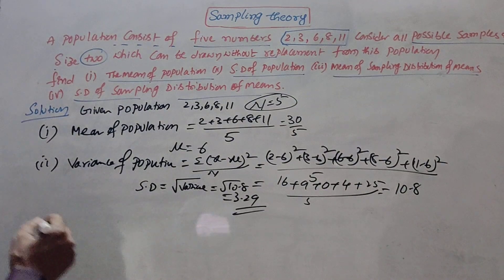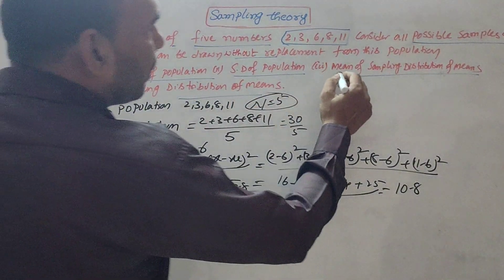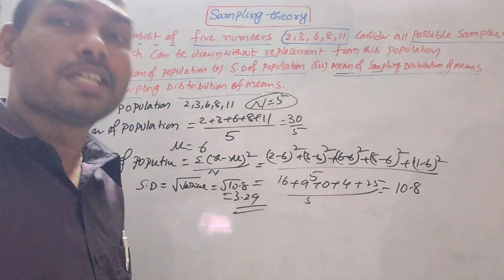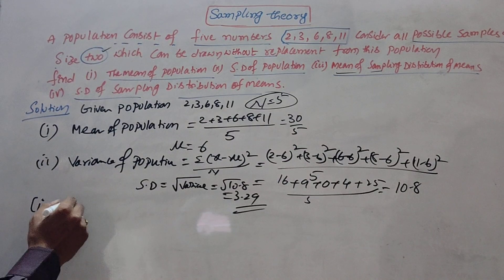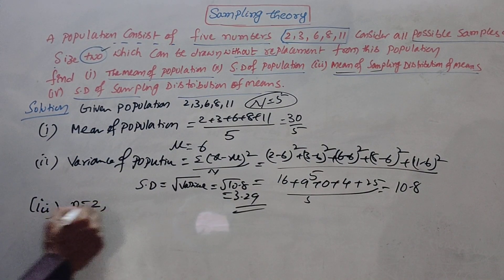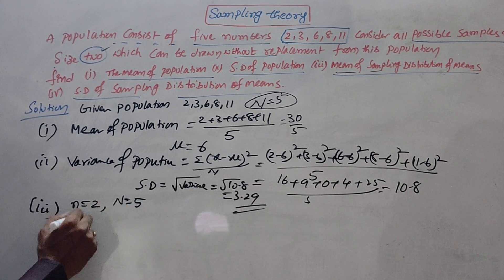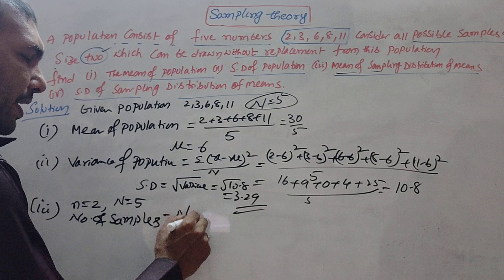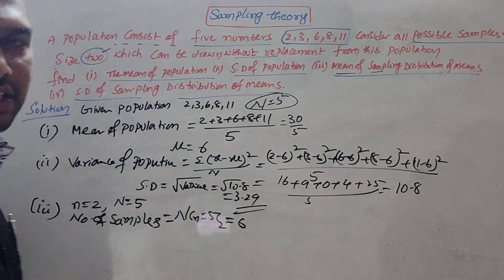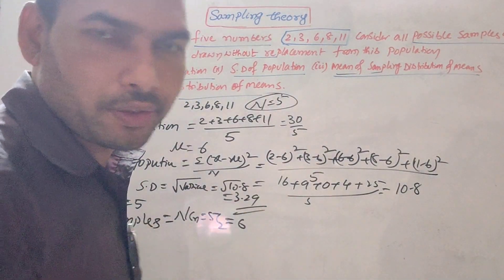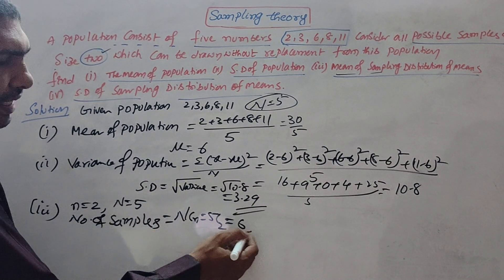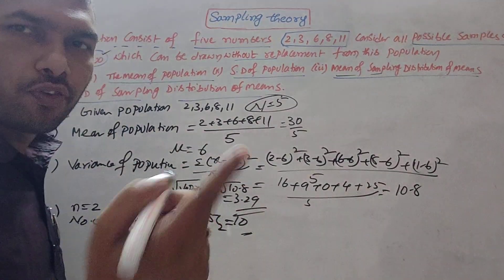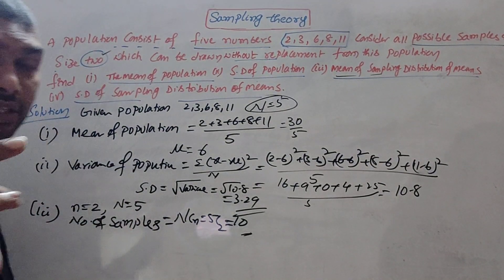Now the third and very important part: to find the mean of the sampling distribution of means, we first prepare the samples. We calculate sample means and then the mean of those means. We need to prepare all samples of size 2. The population size N = 5, sample size n = 2. The number of samples without replacement is 5C2, which equals 10. So we draw 10 samples of size 2.